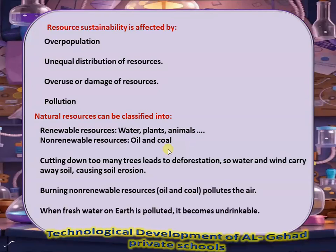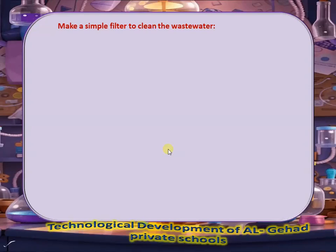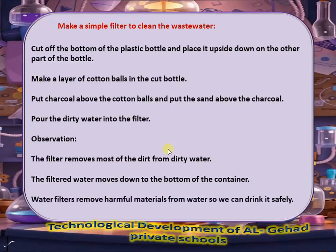When fresh water on the earth is polluted it becomes undrinkable. To make a simple filter to clean waste water: cut off the bottom of the plastic bottle and place it upside down. Make a layer of cotton balls in the bottle, put charcoal above the cotton balls, and put sand above the charcoal. Pour the dirty water into the filter. The filter will remove most of the dirt, and the filtered water moves down to the bottom of the container. Water filters remove harmful materials from water so we can drink it safely.